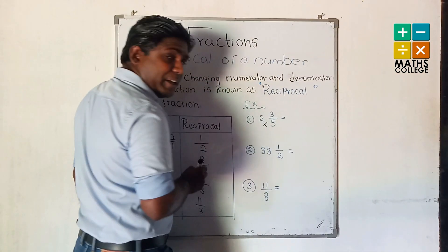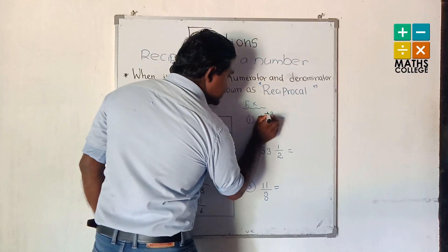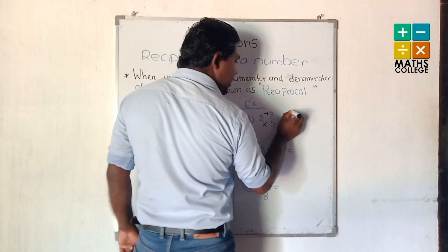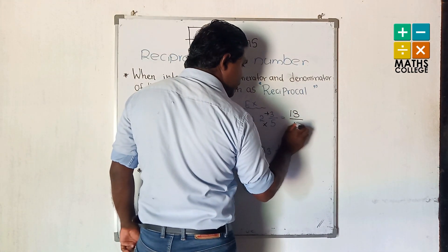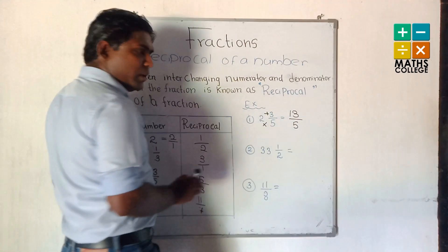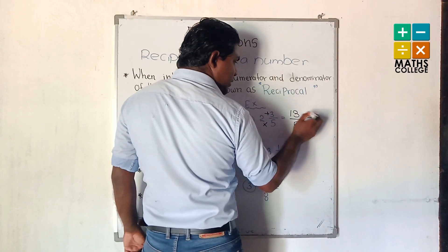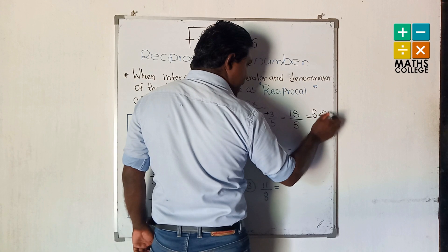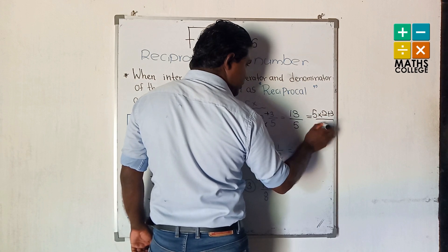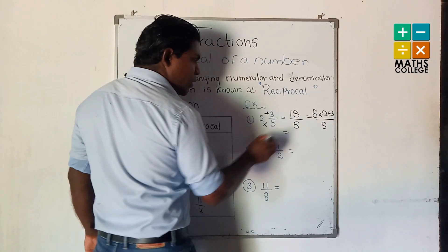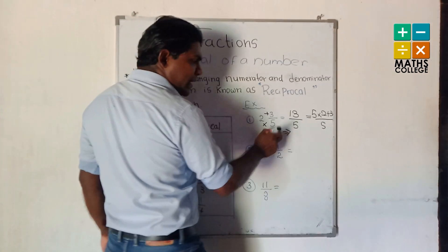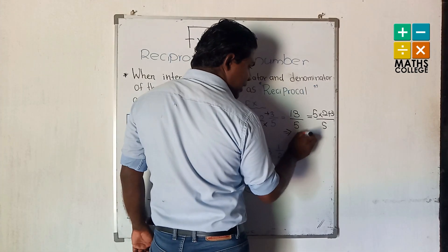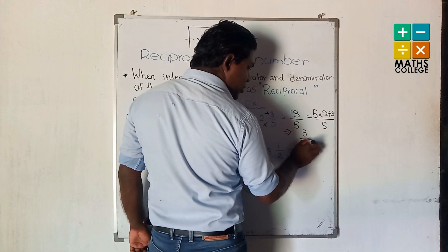For example, 2 and 3/5: 5 multiplied by 2, addition 3. That gives 10 addition 3 = 13 upon 5. To be clear: 5 multiplied by 2 plus 3 upon 5. Note this is not equal to the reciprocal symbol — I write an arrow. What is the reciprocal? The reciprocal is 5 upon 13.